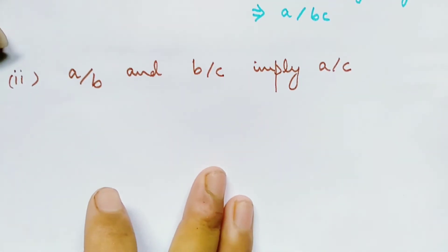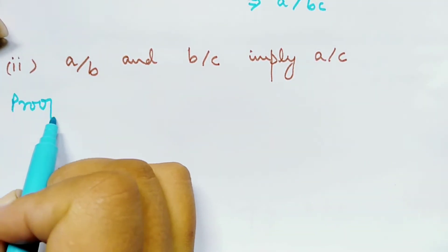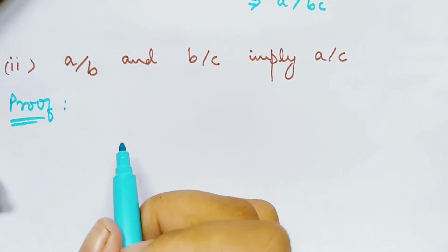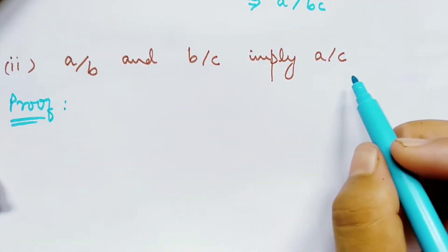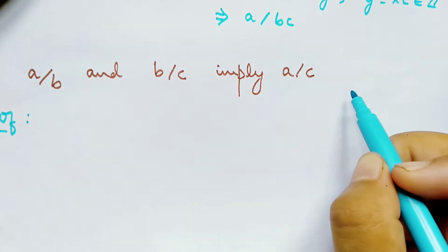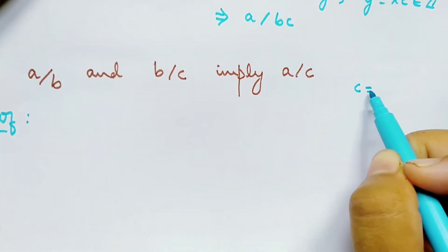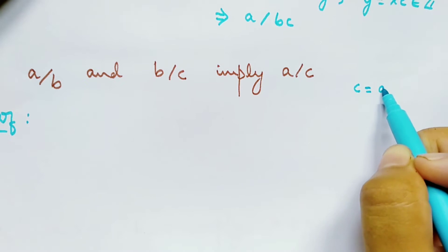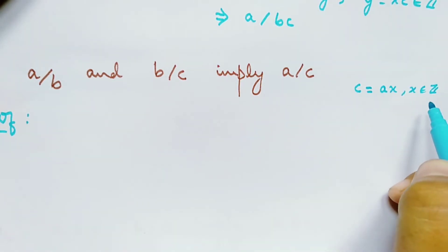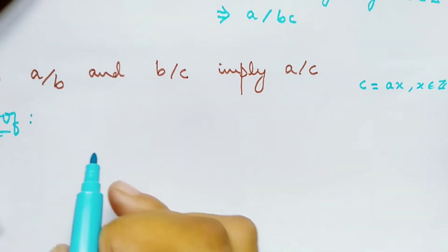Now the second theorem: if a divides b and b divides c, then it implies a divides c. To show that a divides c, we should be able to express c as a times some integer.